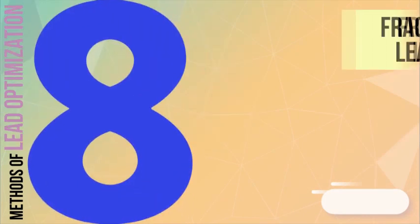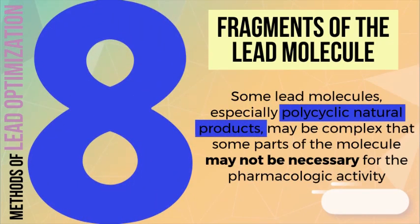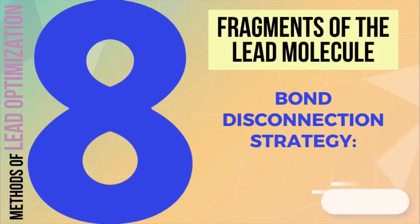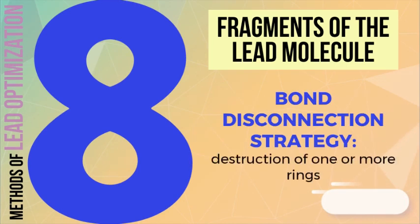Some complex lead molecules contain parts that may not be necessary to produce the desired pharmacologic effect and are thus broken down to the pertinent fragments. Bond disconnection, or the removal of bonds to destroy complicating rings often found in natural products, may be employed to create a compound that is more easily synthesized than the original lead molecule — as in the case of morphine, whose analgesic activity is retained even when the ring system is simplified to metoazocine.